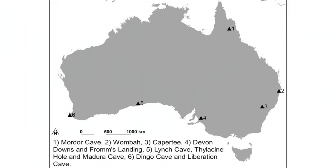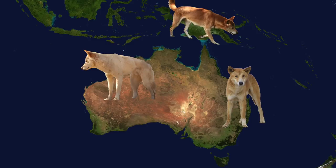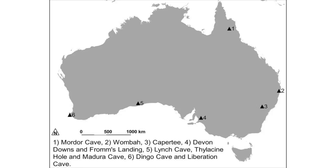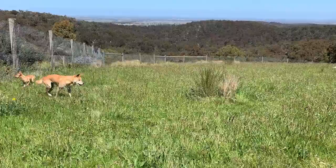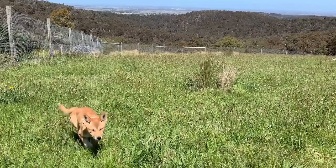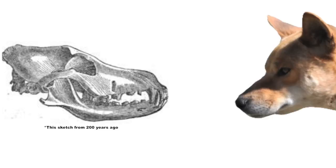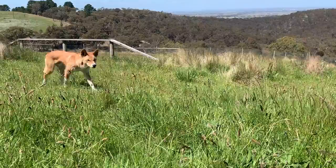The oldest dingo remains ever discovered are about 3,500 years old and curiously were found in the south of Australia, even though dingoes were thought to have immigrated from the north. This implies that once dingoes got to Australia, they probably spread incredibly quickly through the continent, possibly aided by a commensal relationship with Aboriginal people. Dingo remains from thousands of years ago show pretty much identical bone morphology to modern-day dingoes, proving that dingoes are an ancient group of canines that haven't greatly changed for the last few thousand years.